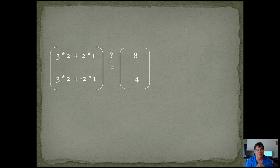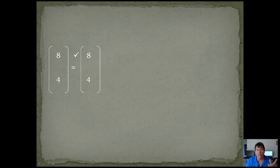On the left, A times x is going to be 3 times 2 plus 2 times 1, 3 times 2 plus negative 2 times 1. And we want to know, does that equal 4? We just reduce this, and you can see that both matrices match.